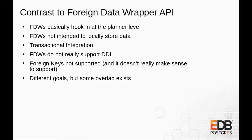Some might think: we have foreign data wrappers — how is this different? You can do some things with a table access method using a foreign data wrapper, but it's pretty awkward. FDWs were built to access foreign data; they don't really support all the things you want from a normal table. You can't do proper DDL, you can't create indexes. You don't have proper transactional integration — you can't have a proper commit that spans multiple foreign data wrappers and a local table and expect it to be correct. You can't have foreign keys or additional constraints. The foreign data wrapper is nice for what it does, but it's not built to do primary data storage.